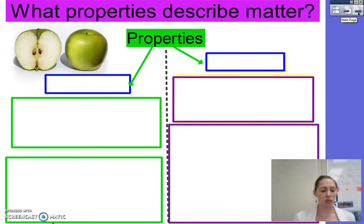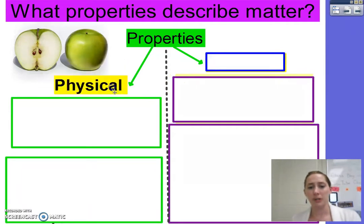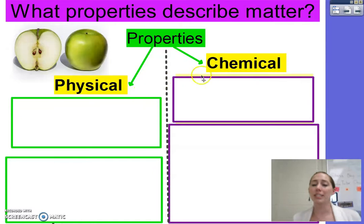So, what properties describe matter? Chemistry is studying that. We have to be able to describe the matter that we're studying. There are two types of properties, and properties are sometimes called characteristics. One property is called a physical property. The other property is called a chemical property.